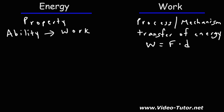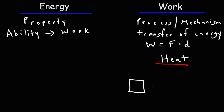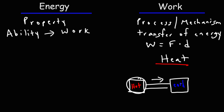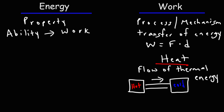There are other ways in which you can transfer energy. Another example is heat. Heat represents the flow of specifically thermal energy. So if you have two objects — one is hot and the other is cold — heat is going to flow from hot to cold. You're going to have a flow of thermal energy from one object to the other. That flow of thermal energy is heat, whereas the flow of mechanical energy is work.